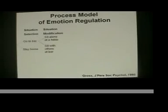Having decided to go to the bar, Suzanne then has to decide: am I going to sit alone at a table or will I sit with other people at the bar? This is situation modification — in the situation, I can modify specific parameters by making decisions about what I'm going to do.